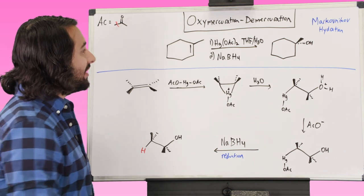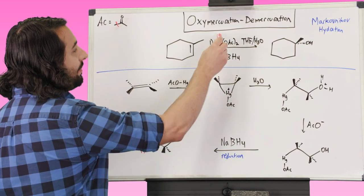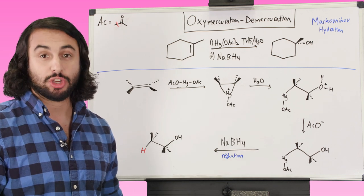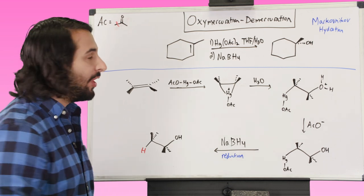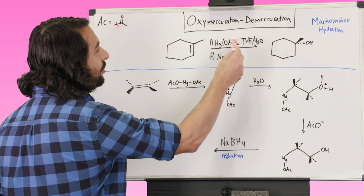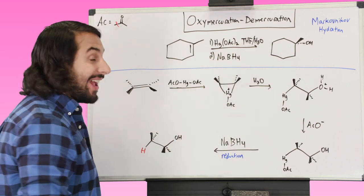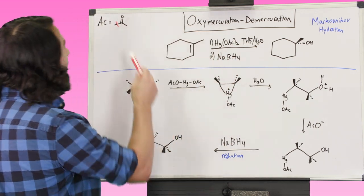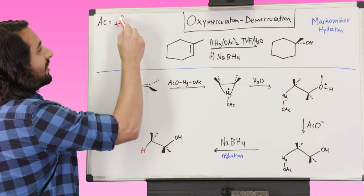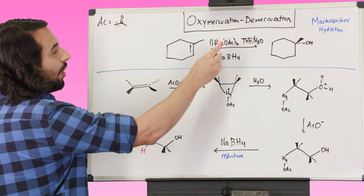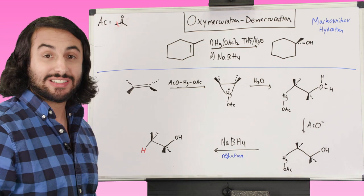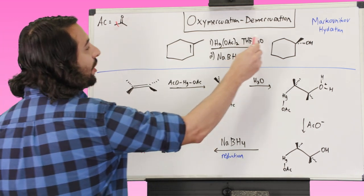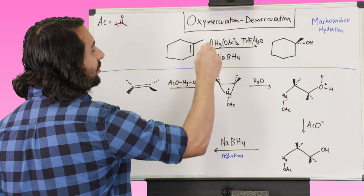So we have this compound — the tip-off is we've got mercury in there. So oxymercuration-demercuration is referring to mercury. This compound is mercury with two acetate groups on there. AC, or acetyl group, is just this carbonyl and a methyl group, so OAC — there are two acetate groups on that mercury atom. This is the solvent system we're going to run this in, and it's two steps.